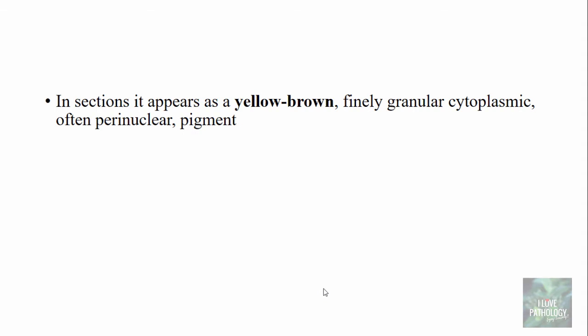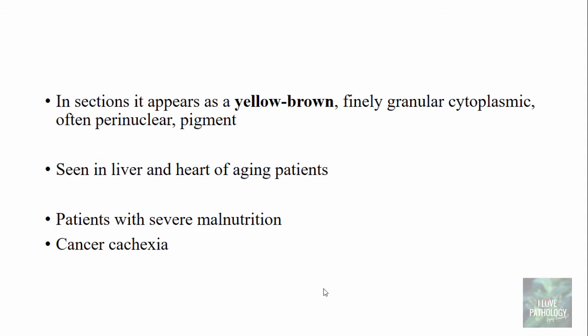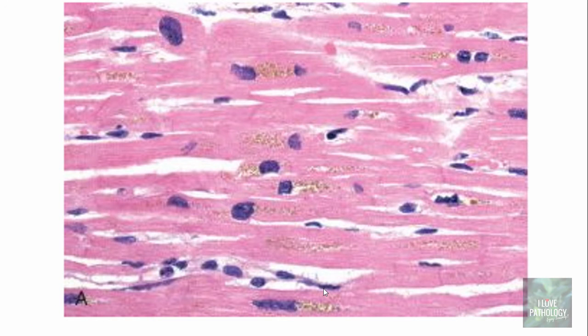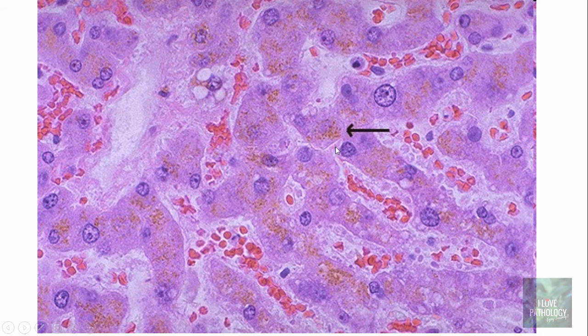In microscopy sections, lipofuscin pigment appears as yellow-brown, finely granular, cytoplasmic — often perinuclear — pigment. It is seen in the liver and heart of aging patients, or in patients with severe malnutrition or cancer cachexia. Under the microscope, these yellow-brown pigments are seen around the nuclei — perinuclear accumulation — and can also be seen in the parenchyma of the liver as yellow-brown pigment present around the nucleus.